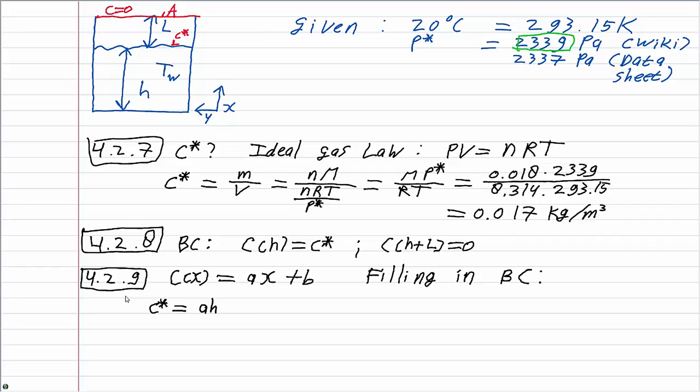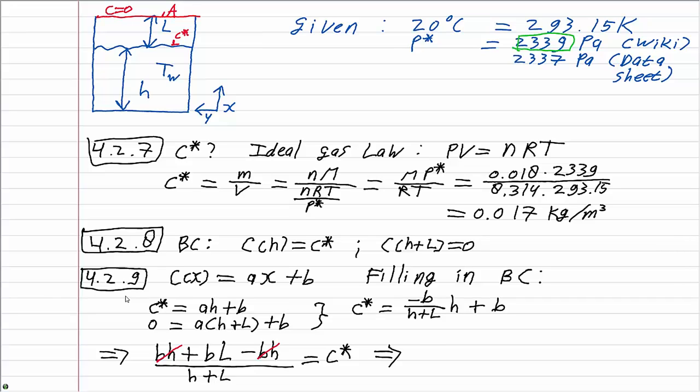We can use the second equation to rewrite a in terms of b and plug this expression into the other equation. Some more rewriting to a common denominator will yield an expression in which some terms negate each other, and then we can just solve for b in a fairly straightforward manner.